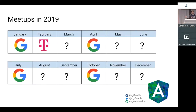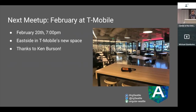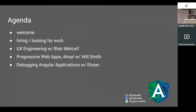Right now, this is the calendar for 2019. The anchor meetups at Google are in January, April, July, and October. Next month is T-Mobile. The next meetup is February 20th at 7 p.m. at T-Mobile, thanks to Ken Burson for putting that on. It's going to be on the east side, since we like to do meetups semi-regularly there for people on both sides of the lake.